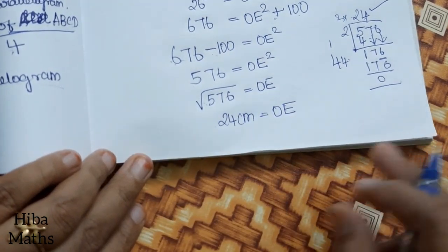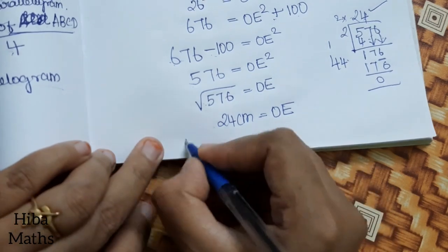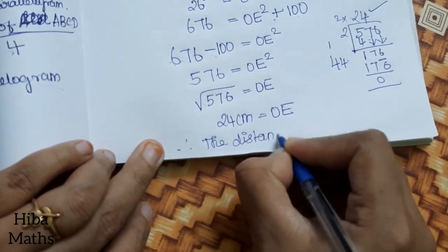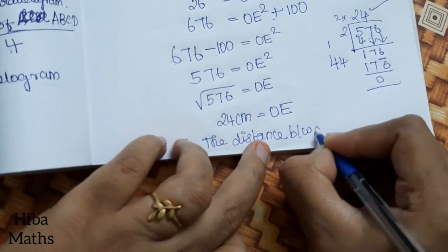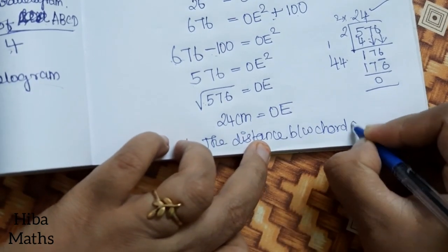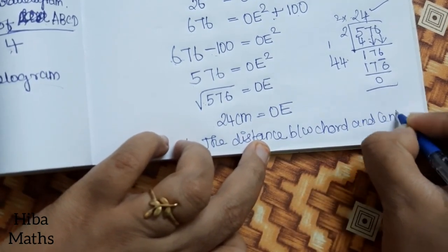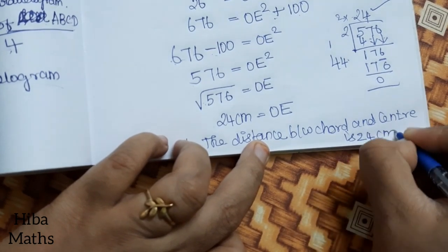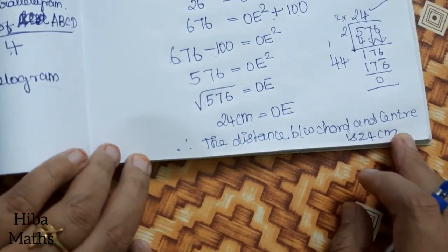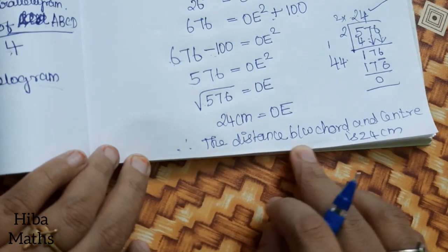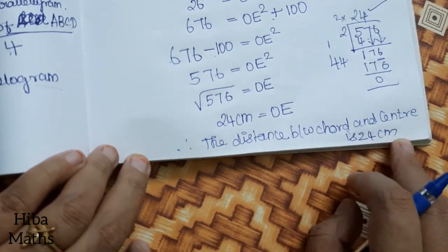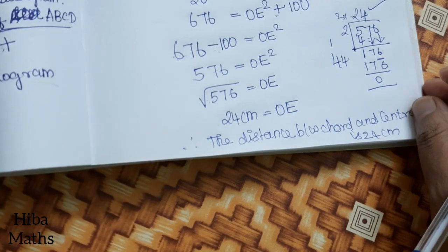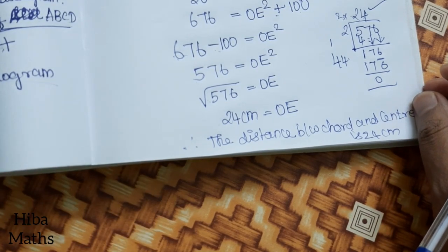The distance between the chord and the center is 24 centimeters. You can see that in the next video. Thank you so much for watching.